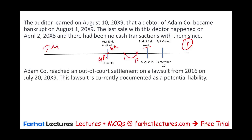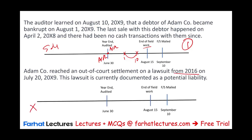Scenario 4: Adam reached an out-of-court settlement on a lawsuit from 2016 on July 20th, which falls in the subsequent events period. The lawsuit was currently documented as a potential liability. Because something was outstanding as of June 30th and was resolved during the subsequent period, we need to book an adjusting entry and modify the June 30th financial statements. The answer is Option 1: modify.